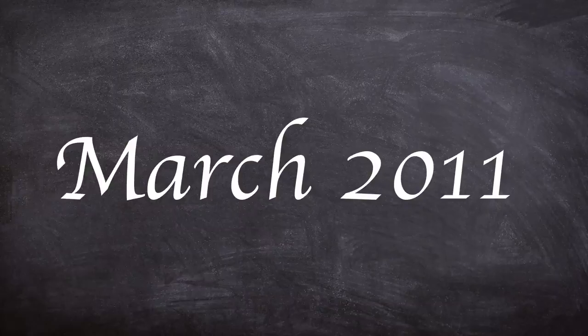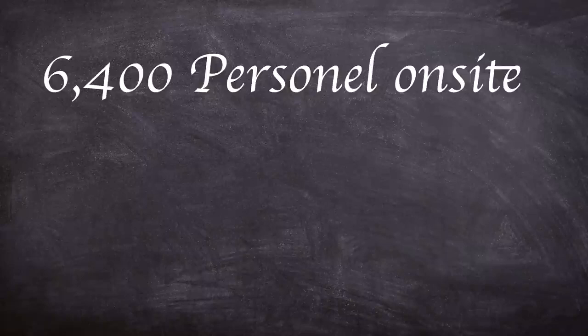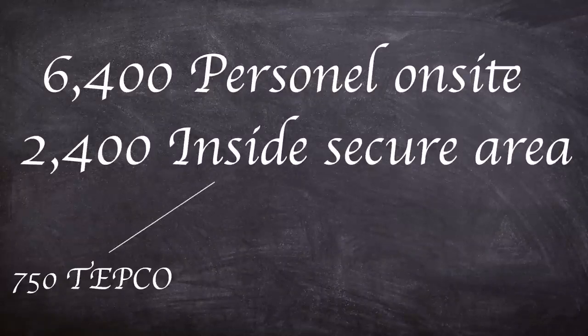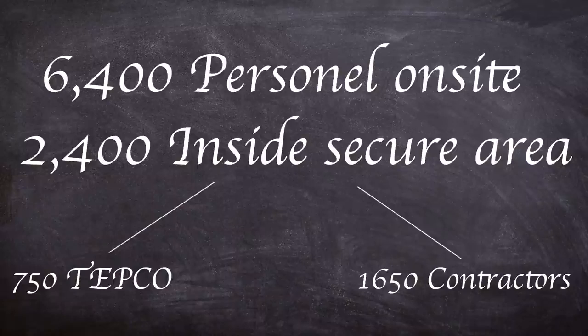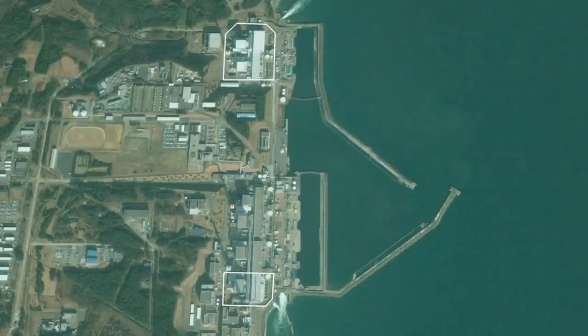This leads us to March 2011. Three of the six units were shut down for refuelling leaving one, two and three in operation. There were some 6,400 workers on site. Approximately 2,400 consisting of 750 TEPCO personnel and around 1,650 contractors were working in the controlled area, with approximately 2,000 carrying out work in the support of the planned refuelling. Unit four had its fuel rods removed and units five and six still had their fuel elements inside the reactors, however the control rods were inserted into the core to stop fission.